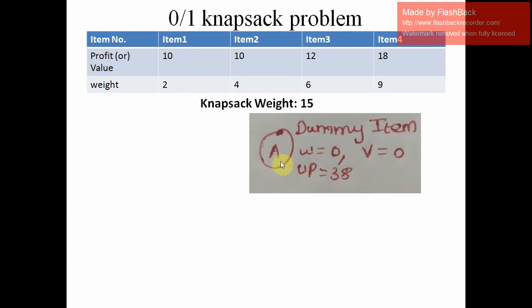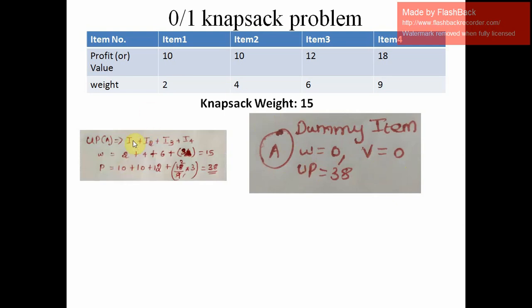First, we will see how to calculate the upper bound using the ratio of the given items. We have to consider the dummy item first. The dummy item has no weight and no value — weight is 0 and value is 0. We take the dummy item into the bag to help find the upper bound. Now, considering item 1: its weight is 2 and profit is 10. Since the weight of item 1 is less than the knapsack weight, we are going to include item 1.